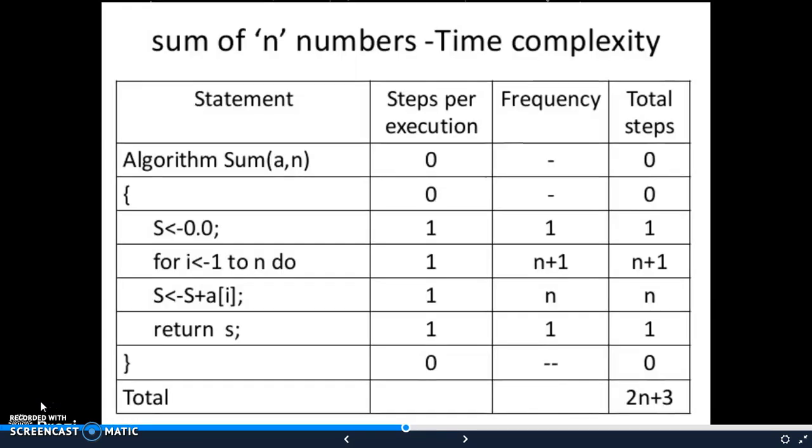In the given slide you can see this is an algorithm for adding the numbers in an array, where a is an array and n is the number of elements. You can see s is initialized with zero - this is a one-time process, the frequency is one. There's a loop where i varies from one to n - this is occurring n plus one times. And there is a statement s equals s plus a of i, which means each element is added to s, which occurs n times. And outside the loop you are finally returning the result which is occurring one time. So we will see why there is n plus one iterations in this loop.